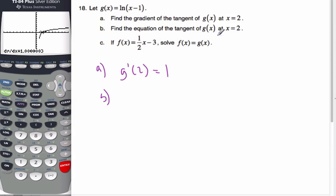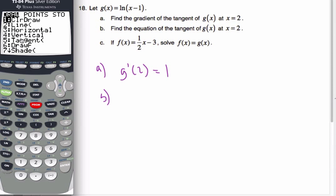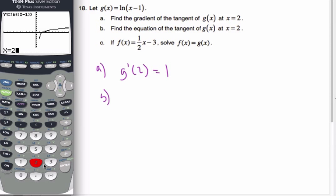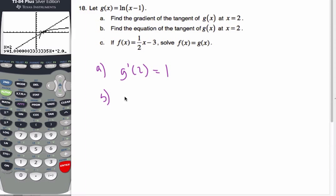Then it says find the equation of the tangent line at x equals 2. I could do it algebraically, but I'll use my calculator. I'm going to my draw menu to draw the tangent line, number 5, at 2. There's my tangent, and here's the equation: y equals x minus 2.